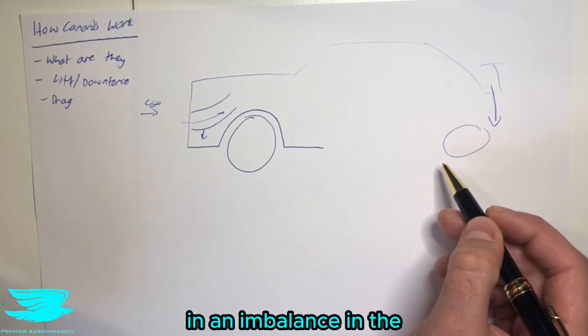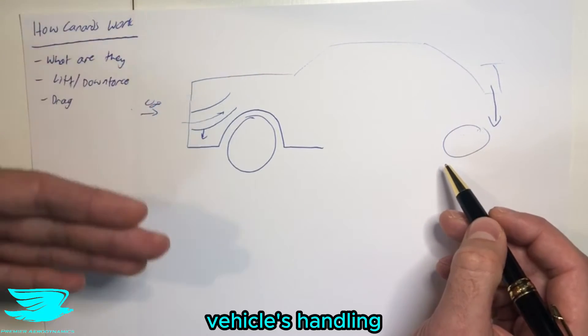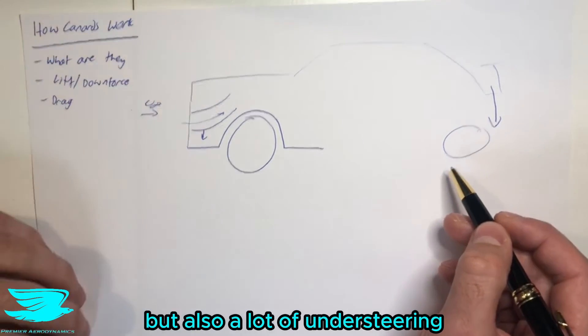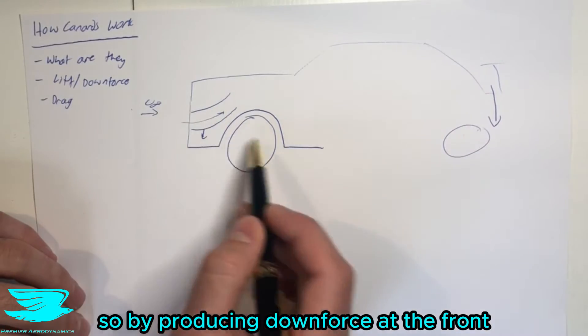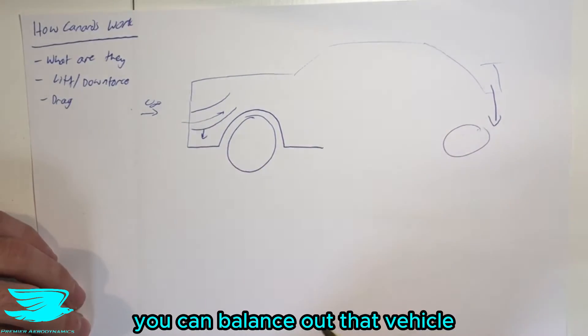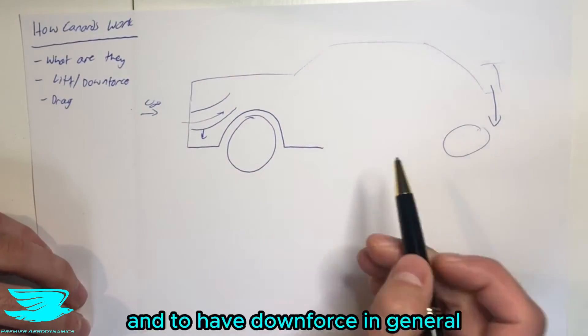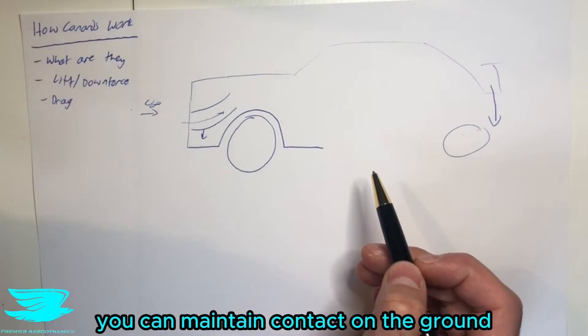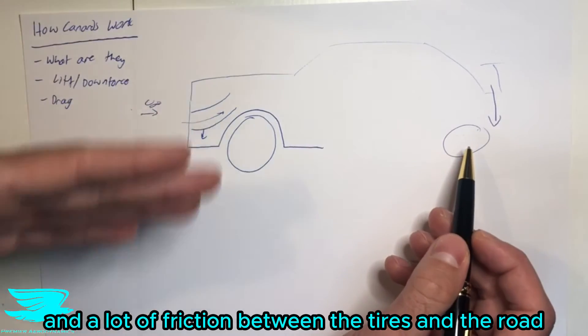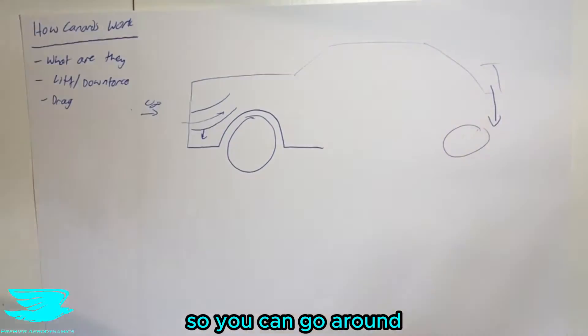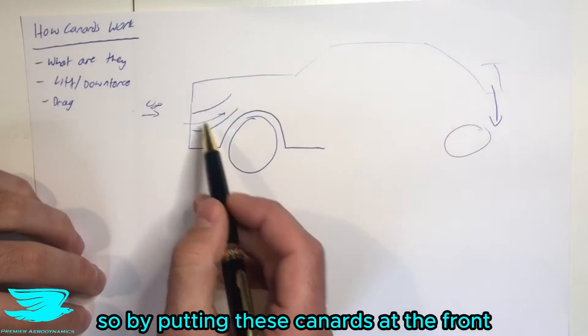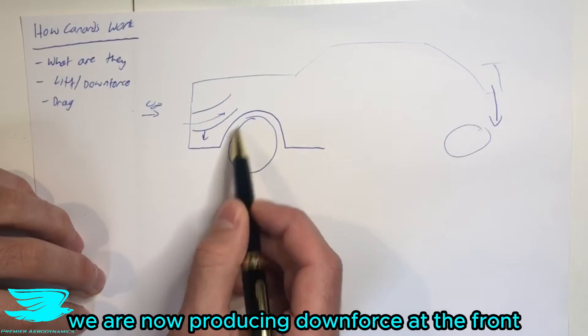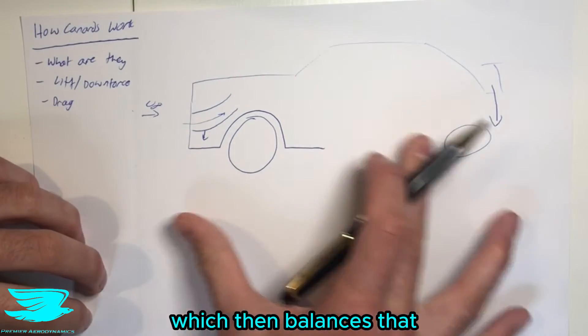And then that often results in not only an imbalance in the vehicle's handling, but also a lot of understeering. So by producing downforce at the front, you can balance out that vehicle, the car itself. And to have downforce in general, you want to have that so you can maintain contact on the ground and a lot of friction between the tires and the road, so you can go around corners. So by putting these canards at the front, we are now producing downforce at the front, which then balances that distribution out.